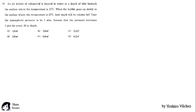An air bubble of volume 1 cubic centimeter is located in water at a depth of 50 meters beneath the surface where temperature is 7° Celsius. When the bubble goes up slowly to the surface where the temperature is 27° Celsius, how much will its volume be? Take the atmospheric pressure to be 1 atm. Assume that the pressure increases 1 atm for every 10 meters depth.